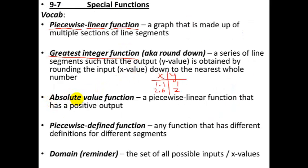Another one is the absolute value function. This one we've already learned about in terms of equations and solving mathematically, but not in terms of graphing. We'll start to learn about how the graph relates to the function and the solutions we got earlier in the year. This is a piecewise linear function — piecewise means it's a whole bunch of pieces of straight lines — and it always has a positive output value from the absolute value part.